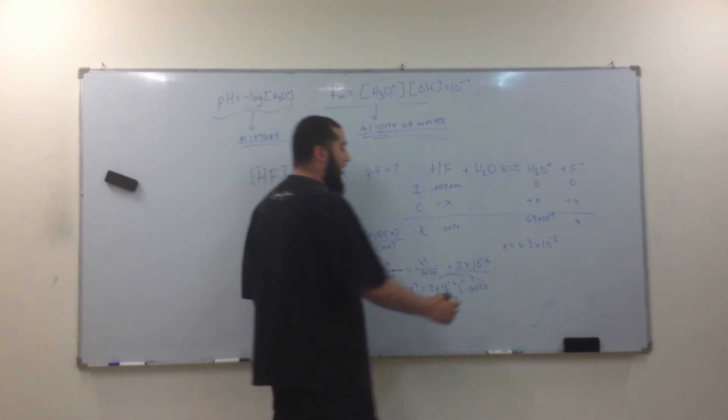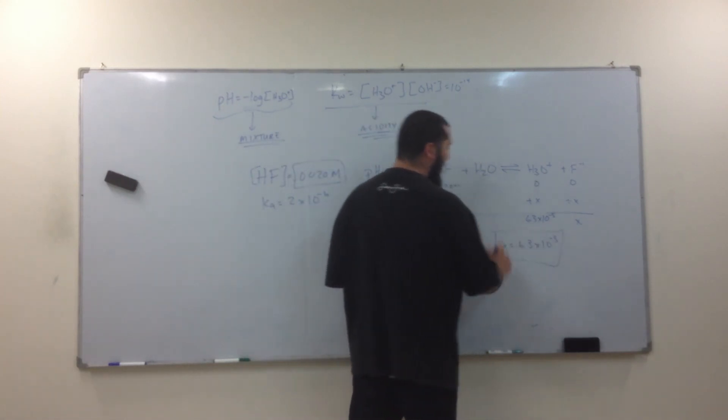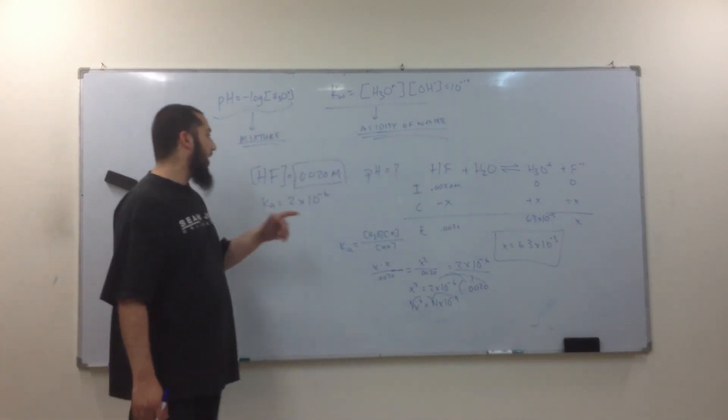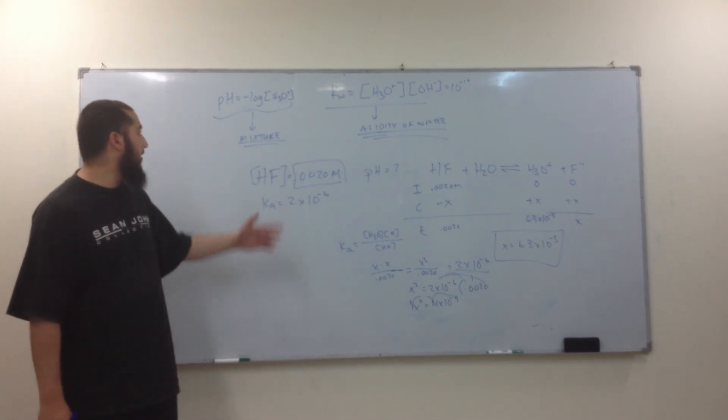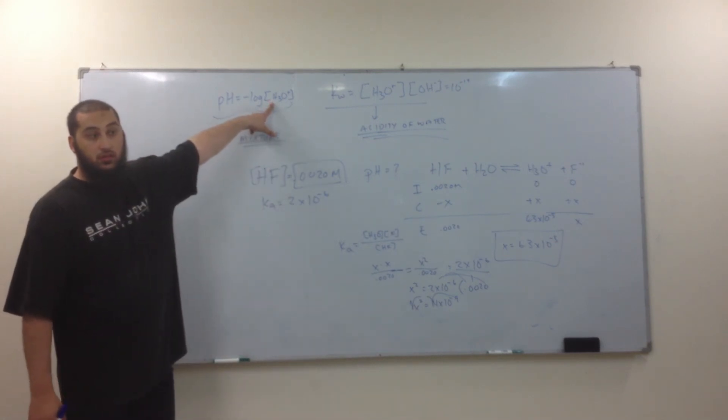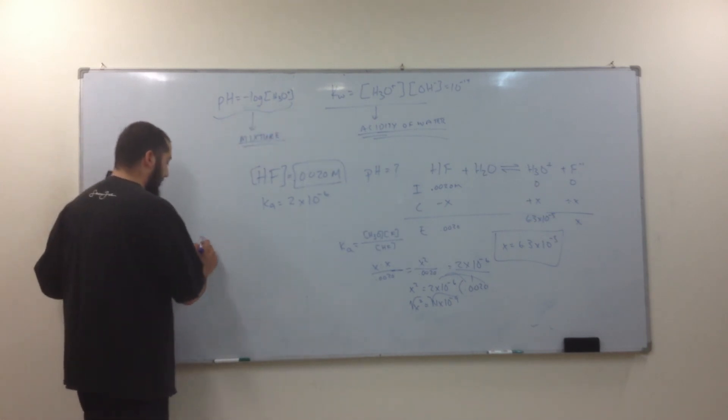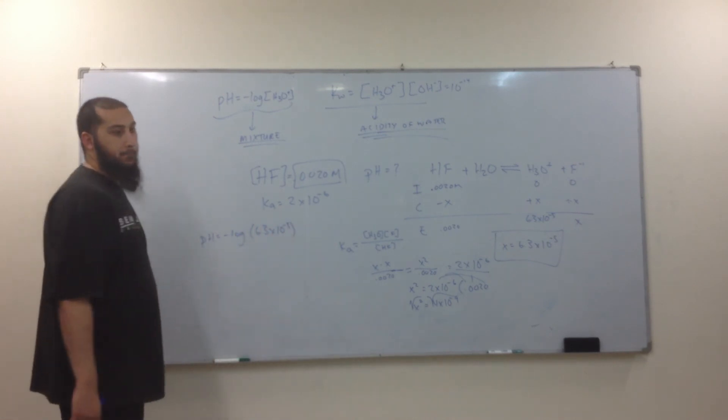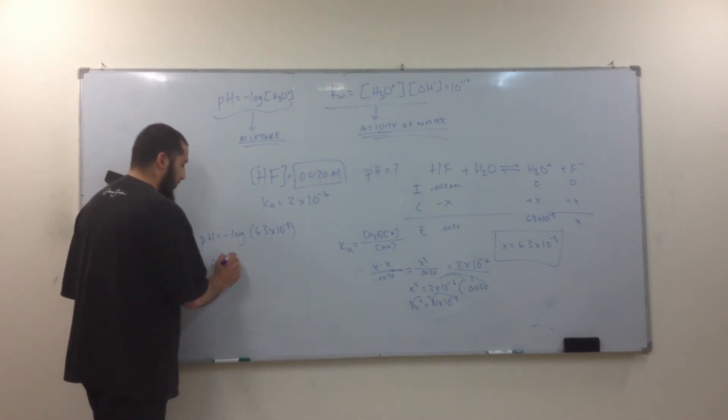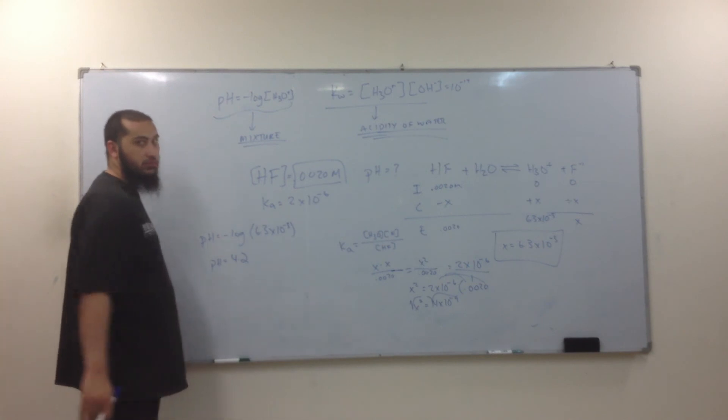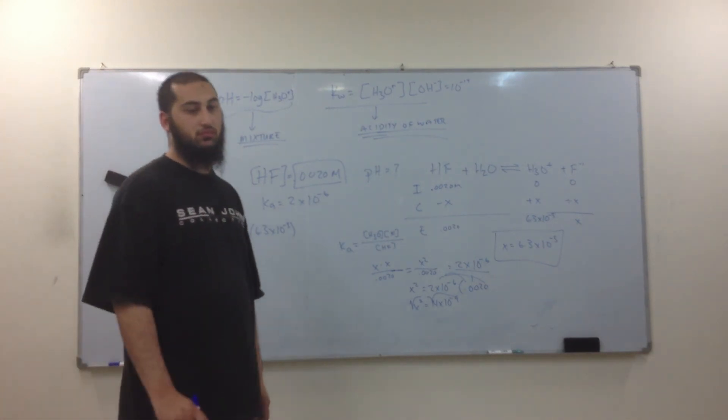So if my concentration of H3O plus is 6.3 times 10 to the negative 5, how am I going to find the pH? Plug it in here. So my pH is negative log 6.3 times 10 to the negative 5, which is 4.2. So the pH is 4.2. Done.